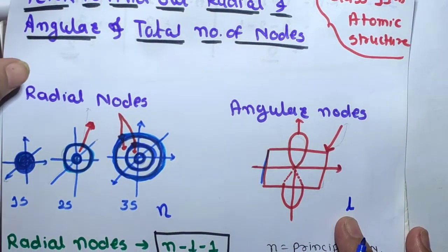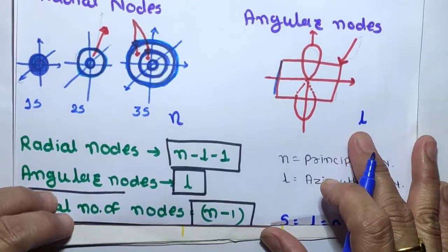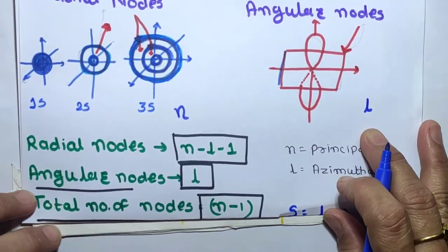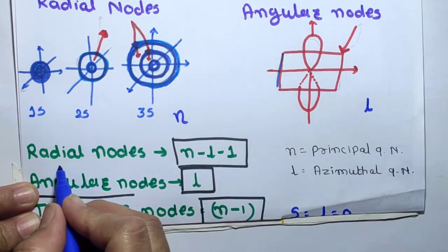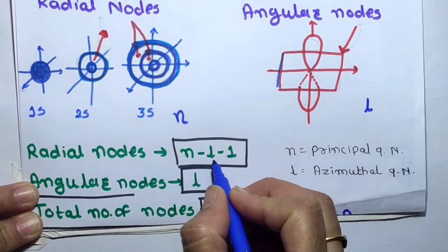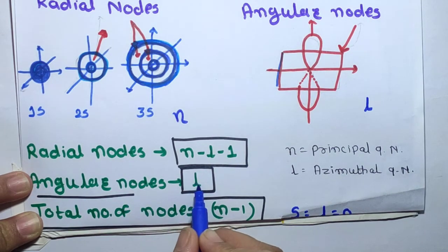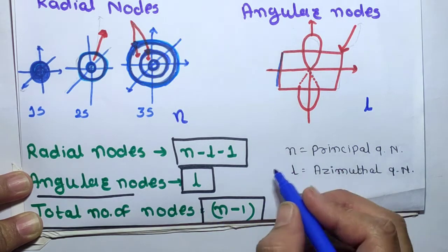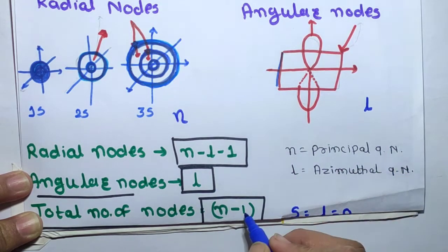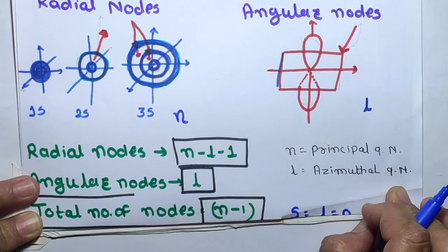Now, if we have an orbital and we want to find the radial, angular, and total number of nodes, we have the following formulas: radial nodes = n − l − 1, angular nodes = L, and total number of nodes = n − 1, where n is the principal quantum number and L is the azimuthal quantum number.